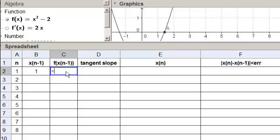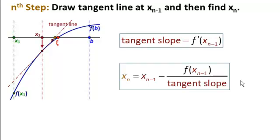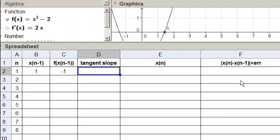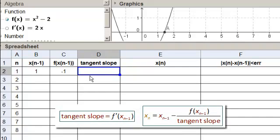Over here we said we were going to do our first run with a starter point of 1. This is just equal to f of whatever address b2. Now, let's go get our formulas for the tangent slope and xn. Here we are at the tangent slope. Just take f prime of xn minus 1, so f prime and then we need the address b2. That's it for the tangent slope.